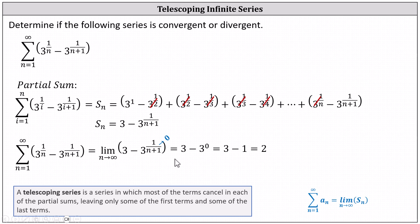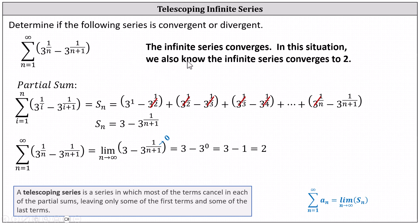Because the limit exists and is equal to 2, we know the given telescoping series converges, and we also know the infinite series converges to 2. I hope you found this helpful.